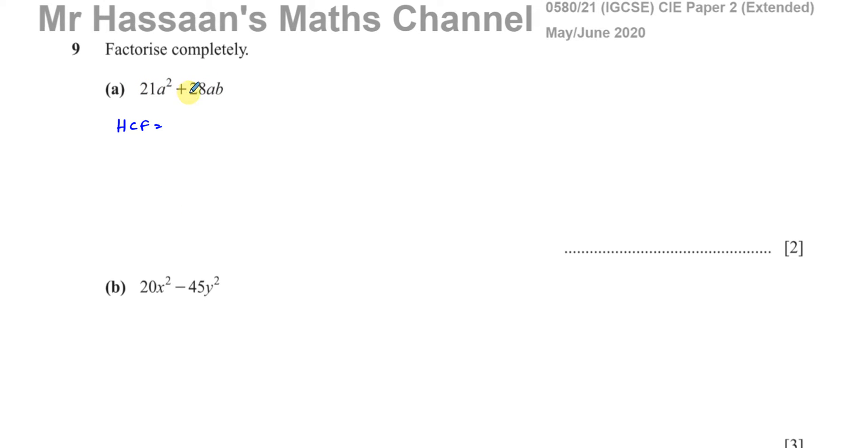We look for the highest common factor of these terms. Now, if you look at the numbers, the highest common factor of 21 and 28 is going to be 7. 7 is the largest number that goes into 21 and 28. 7 times 3 is 21, 7 times 4 is 28.